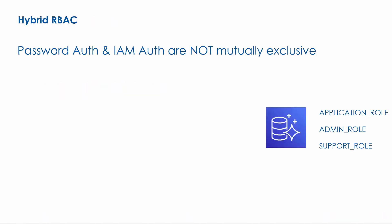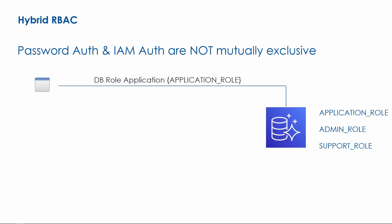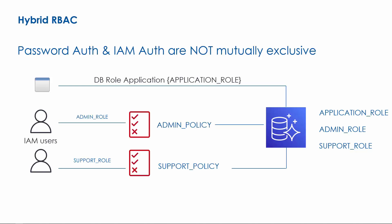Password authentication and IAM authentication are not mutually exclusive — you can use both mechanisms at the same time. This can be referred to as a hybrid RBAC approach. For example, application roles can be created on the database so that you do not have to deal with the IAM authentication connection limit. To make it secure, you can use Secrets Manager as discussed earlier. For individual users, you may use IAM authentication.